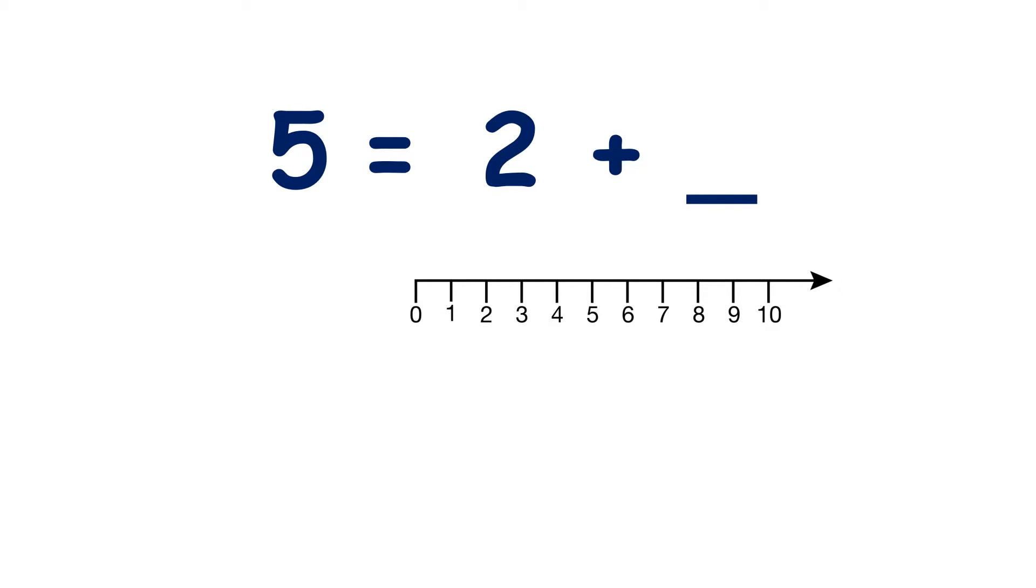Now we're going to look at missing number calculations. Here we have 5 equals 2 plus something. So the question is asking us, what do we need to add to 2 to make 5?